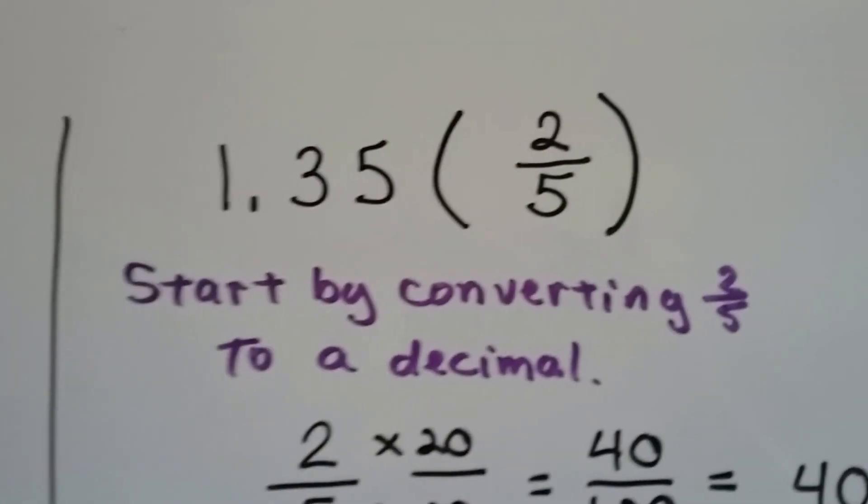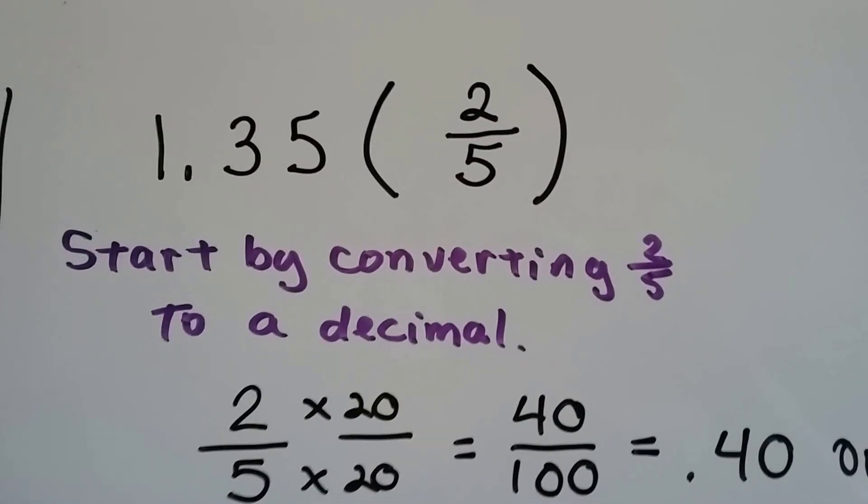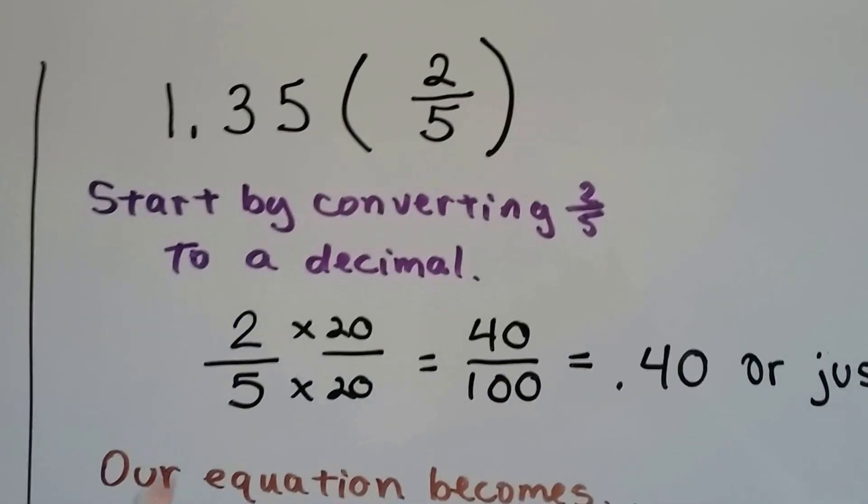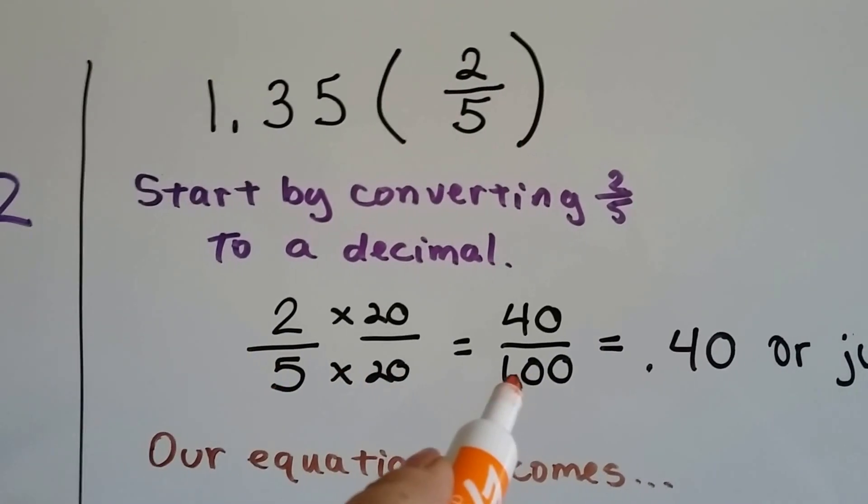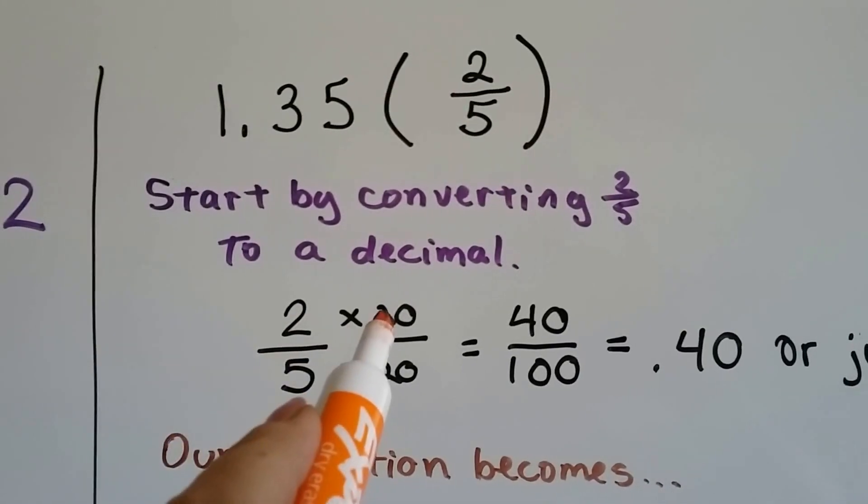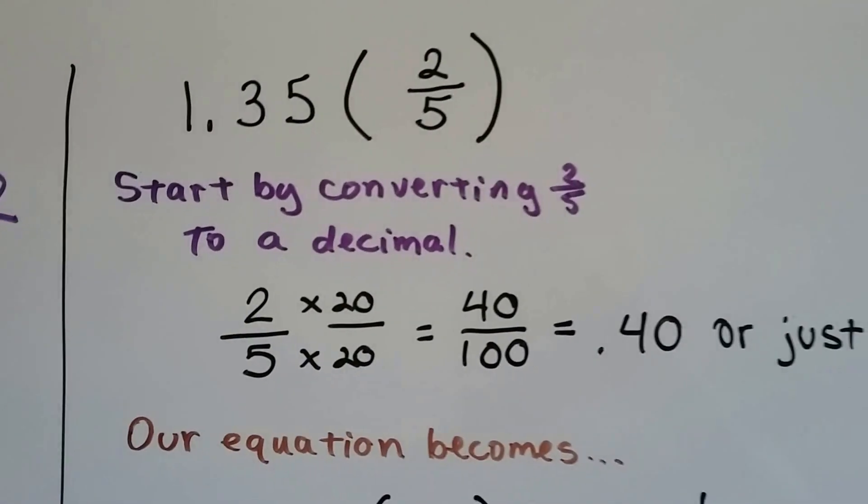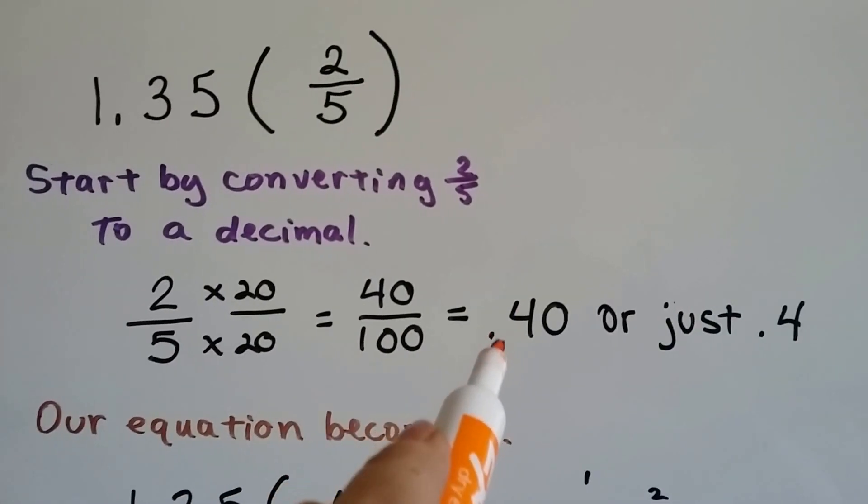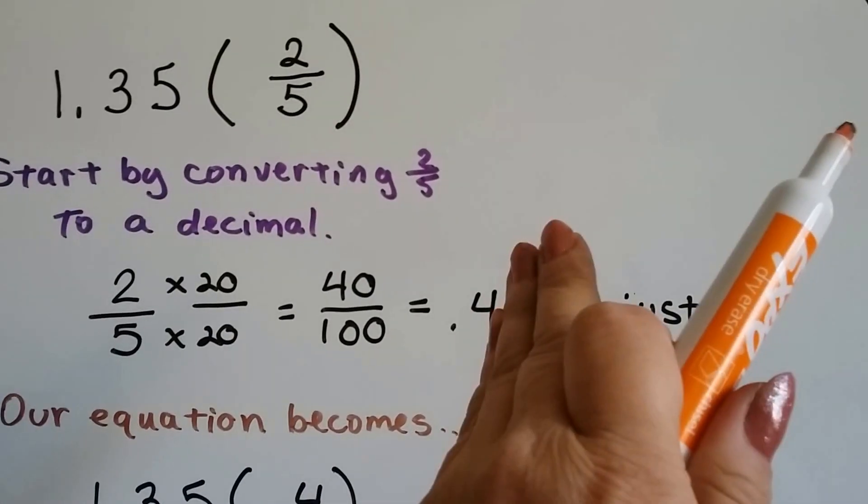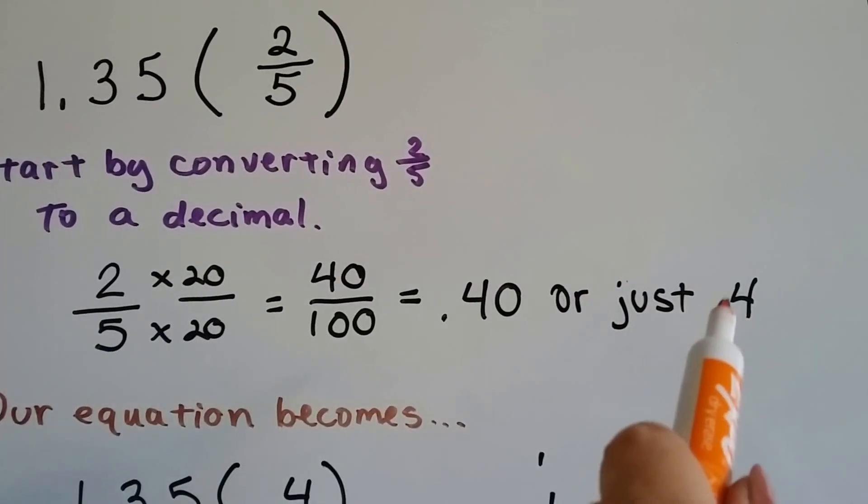Alright, what if we have one point three five multiplied to two-fifths? Well, we've got to convert them first. So, we convert the two-fifths to a decimal. What does the five need to become a hundred? Multiplied by twenty. So, the two gets jealous, he wants to be multiplied by twenty, and he becomes a forty. So, forty one-hundredths is point four zero. This zero isn't really necessary to the right of the decimal. So, we can just say it's point four.